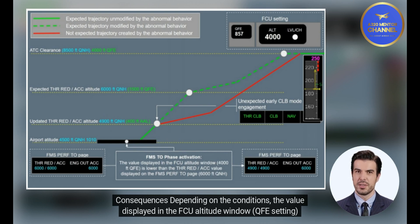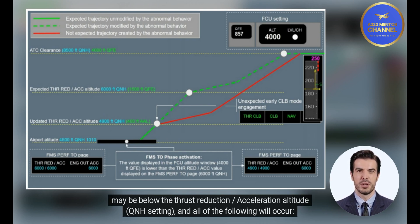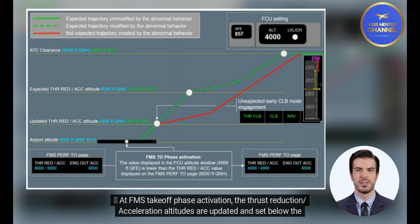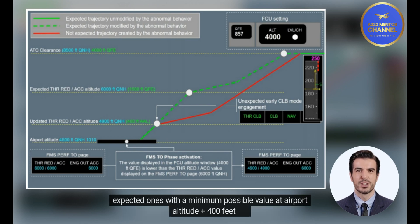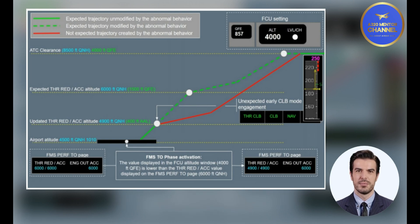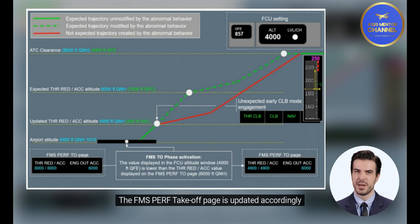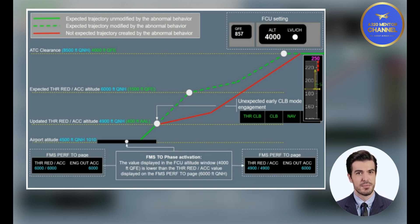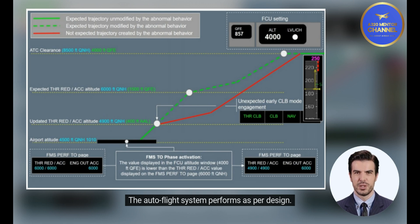Consequences depending on the conditions, the value displayed in the FCU altitude window, QFE setting, may be below the thrust reduction/acceleration altitude, QNH setting, and all of the following will occur. At FMS takeoff phase activation, the thrust reduction/acceleration altitudes are updated and set below the expected ones with a minimum possible value at airport altitude plus 400 feet. The FMS PERF takeoff page is updated accordingly. The autoflight system performs as per design.